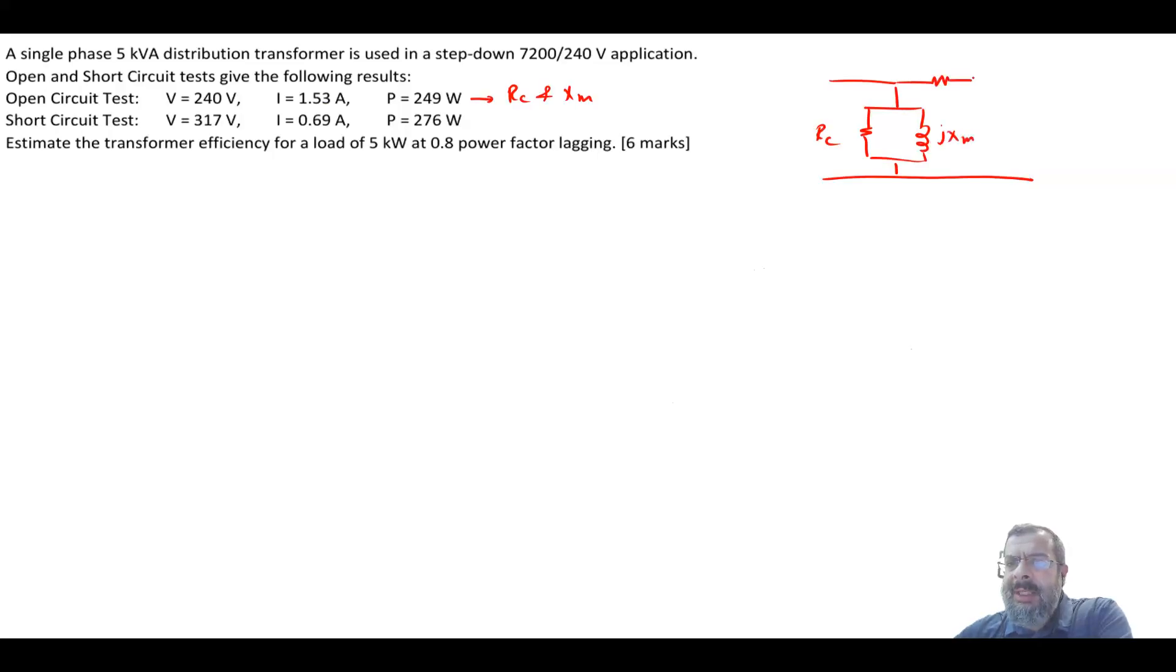And this basically represents the winding of the transformer. So we have here R equivalent and JX equivalent. Now I will use, you can use either refer to the primary or the secondary. I will use the model referred to the primary. So here we'll be VP and IP. So since it's referred to the primary, we have the actual primary voltage, the actual primary current.